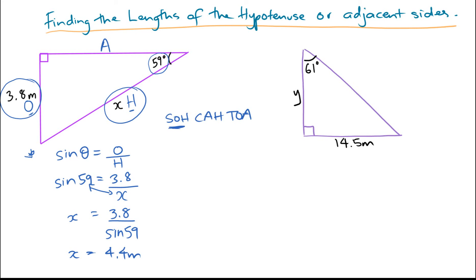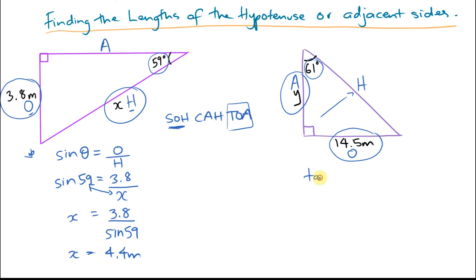Let's have a look at the second example. Again, labeling the sides of our triangle: opposite the right angle is the hypotenuse side; adjacent to the angle of interest is the adjacent side; and opposite the angle of interest is the opposite side. We are given the length of the opposite side and we're trying to find the adjacent side, so we're dealing with O and A. The trig ratio we're dealing with is TOA, which stands for: the tangent of the angle is equal to opposite side divided by the adjacent side. Now substitute in what we know — the angle is 61.